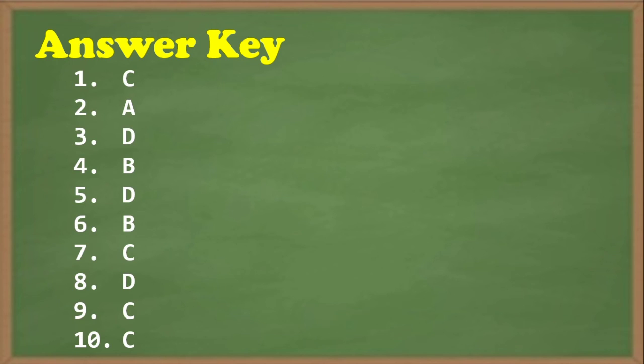Here are the answers of your assessment. Please check your answer and please be honest. Number one, Letter C. Two, A. Three, D. Four, Letter B. Five, Letter D. Six, Letter B. Seven, C. Eight, D. Nine, C. And ten, C. You got it! Who got ten? Very good!